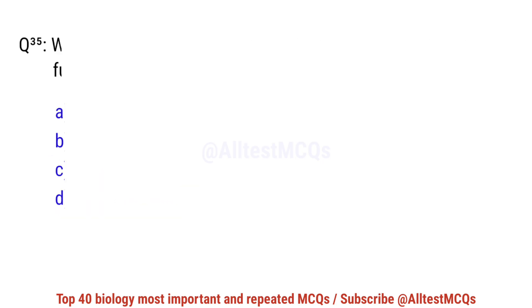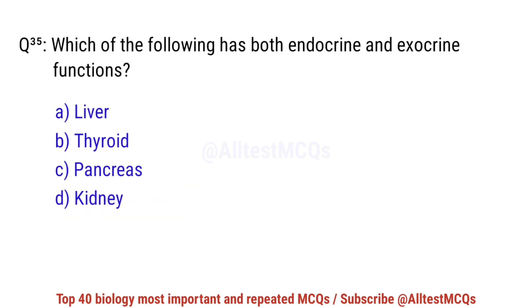Question number 35. Which of the following has both endocrine and exocrine functions? The right option is C: Pancreas.